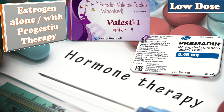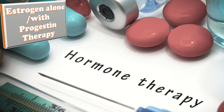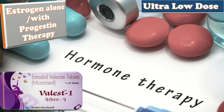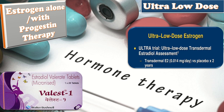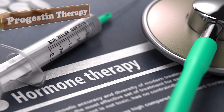Low-dose regimens also include micronized estrogen 0.5 mg per day and transdermal estradiol 0.025 mg per day. For ultra-low dose, the regimens include micronized estradiol 0.25 mg per day and transdermal estradiol 0.014 mg per day. Progesterone options include medroxyprogesterone acetate, micronized progesterone, norethindrone acetate, drospirenone, and levonorgestrel.